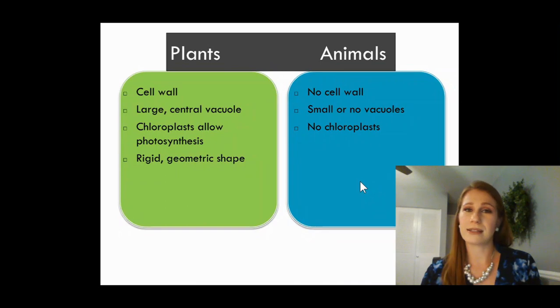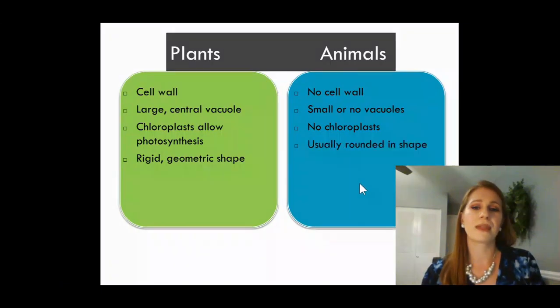They do not have chloroplasts. I really wish we had chloroplasts. It would be very cool to be able to go out in the sun and make our own energy and not have to eat. And animal cells are usually rounded in shape, nice and organic shaped, not quite as geometric.